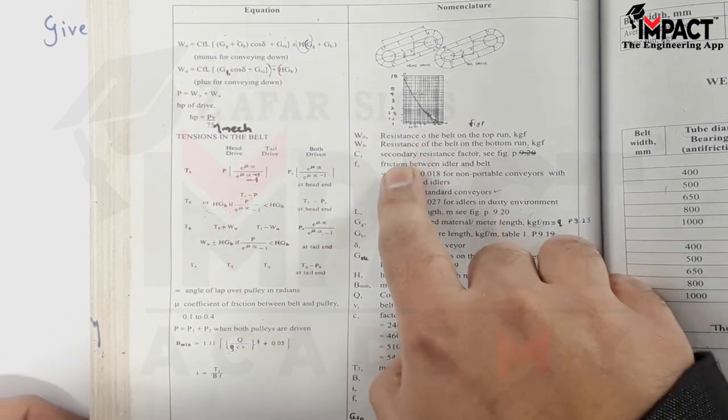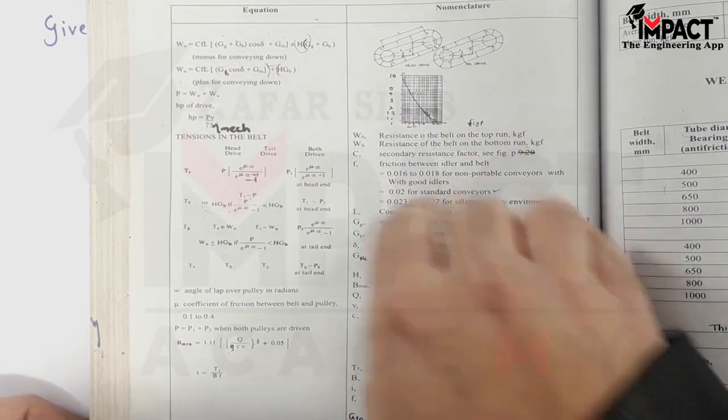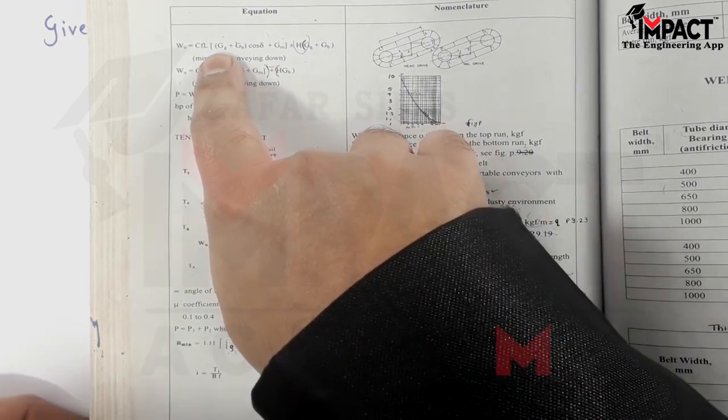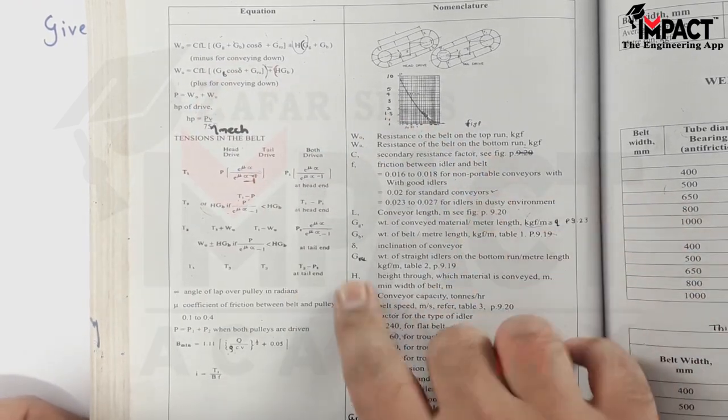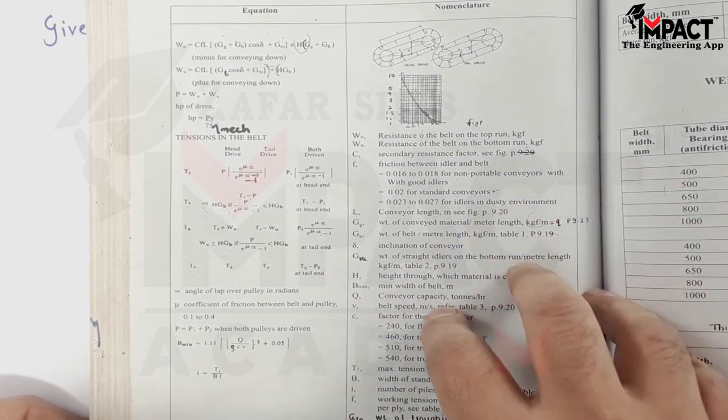Now C is called as the secondary resistance factor. F is called as the friction between idler and belt. L is the conveying length in terms of meter. G suffix G that is called as the weight of the conveyed material, that is the material which is kept on the conveyor belt.